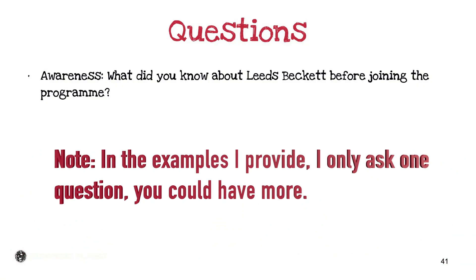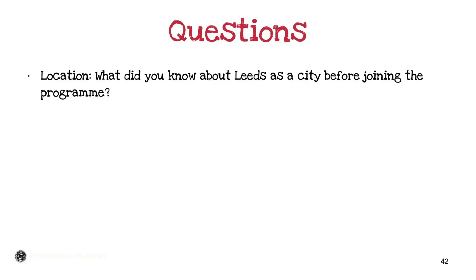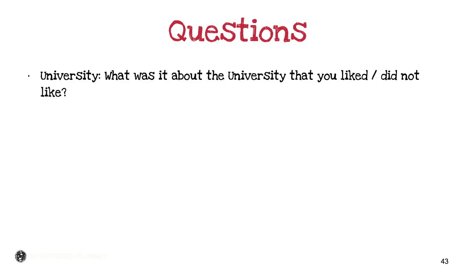Bear in mind that you want to supplement each question with two or three further questions — having too many will make the process take forever, both in interviewing and transcribing. For awareness, you could ask something like: 'What did you know about Leeds Beckett before joining the program?' They'll give you an answer and you can probe further. For location, you might ask: 'What did you know about Leeds as a city before joining the program?' — a valid question even for someone from a different university.